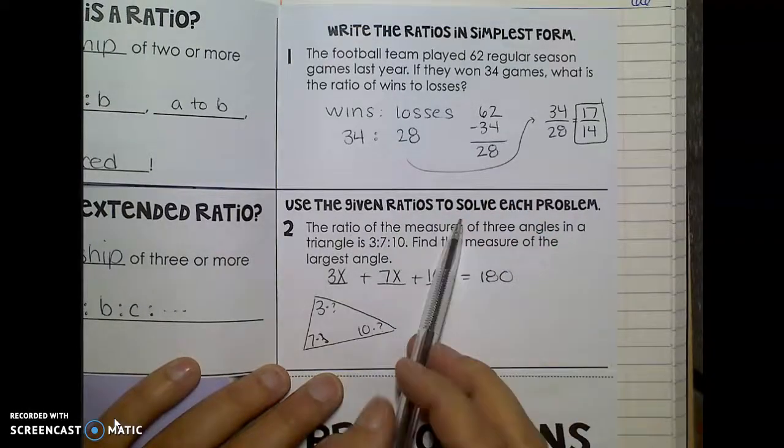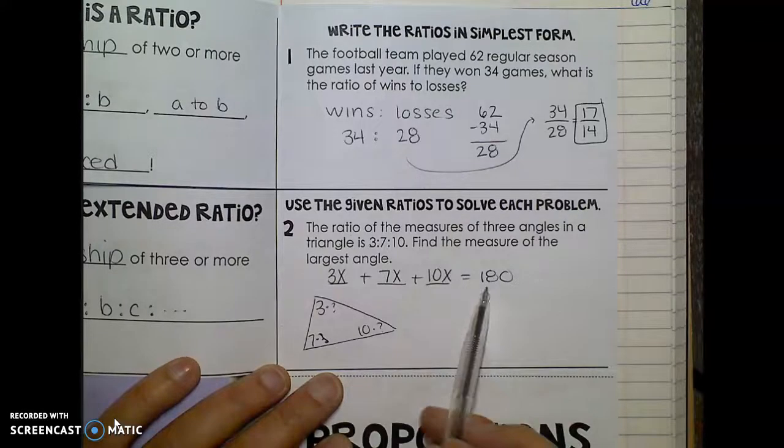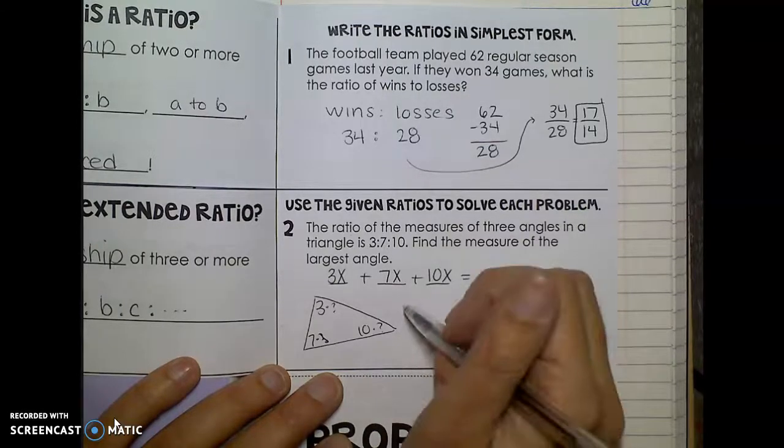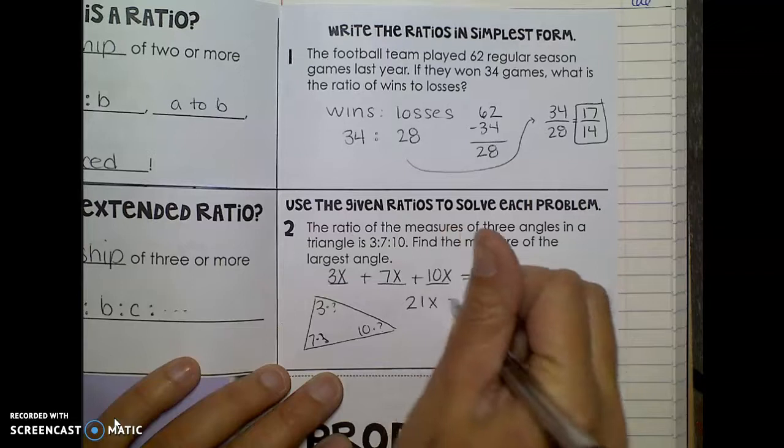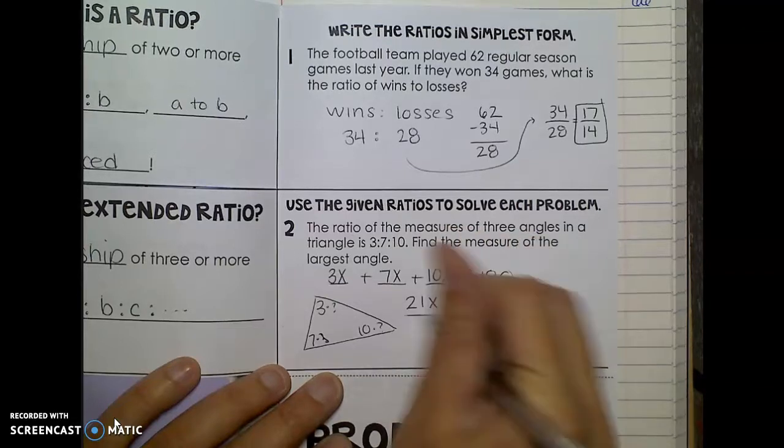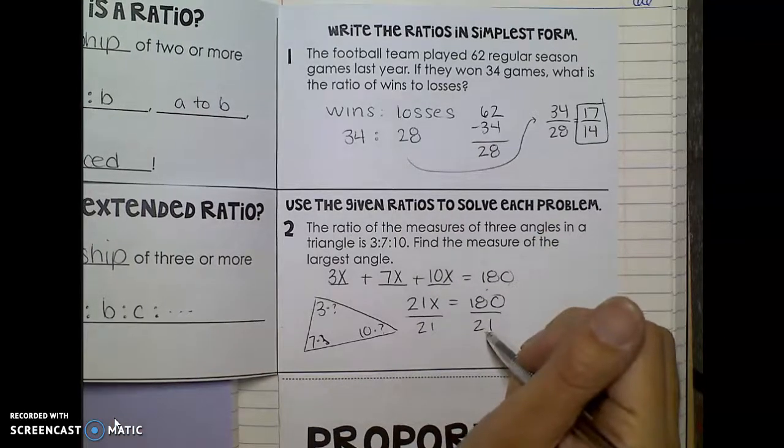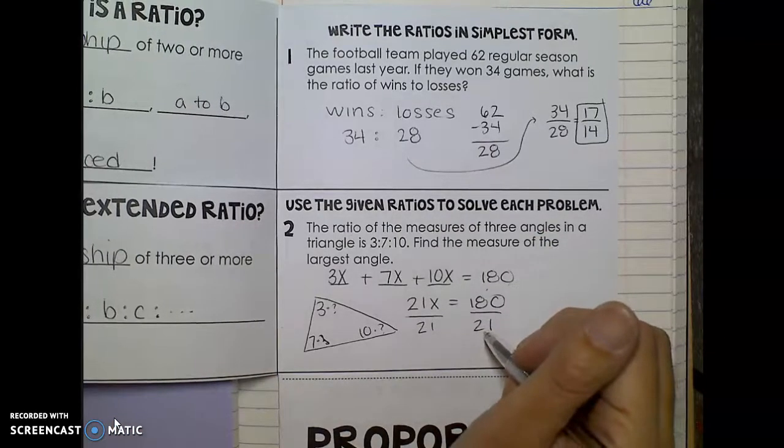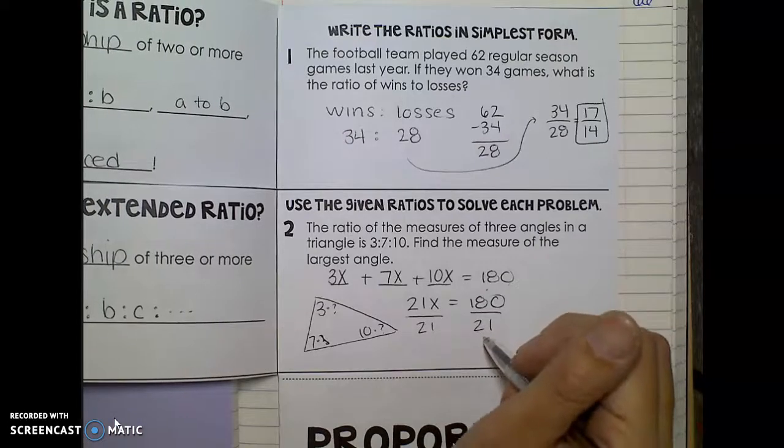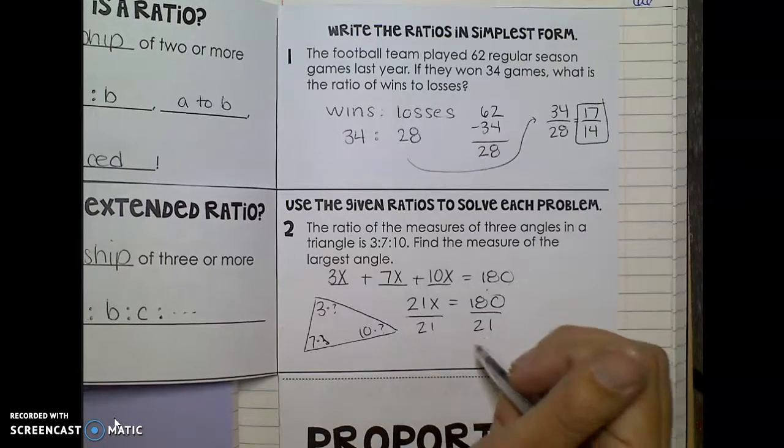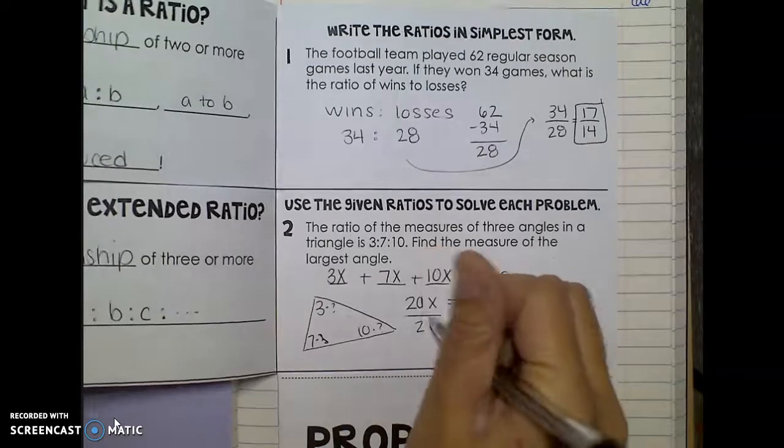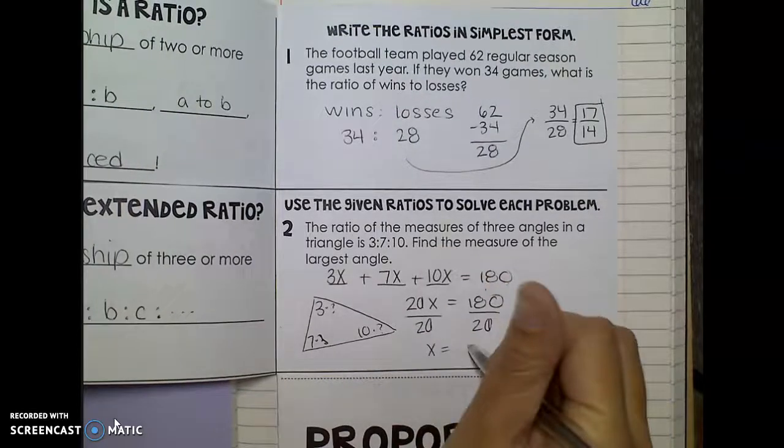And then because we're talking about the sum of the angles, add them all up to 180. So I would have 21x equals 180, and then I would divide by 21, which unfortunately doesn't go in very nicely. So we get x equals 9.